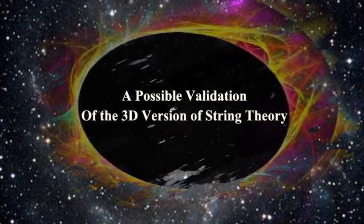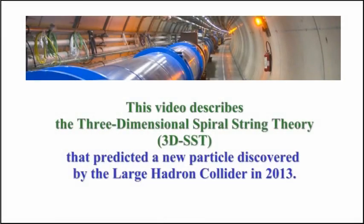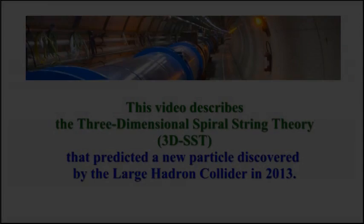A possible validation of the 3D version of string theory. This video describes the three-dimensional spiral string theory, 3DSST, that predicted a new particle discovered by the Large Hadron Collider in 2013.